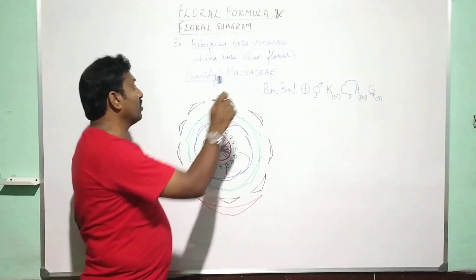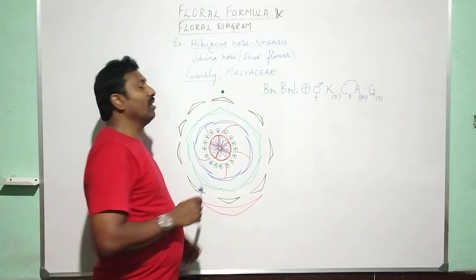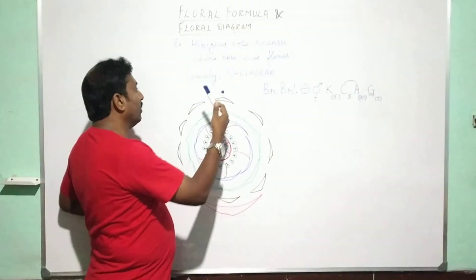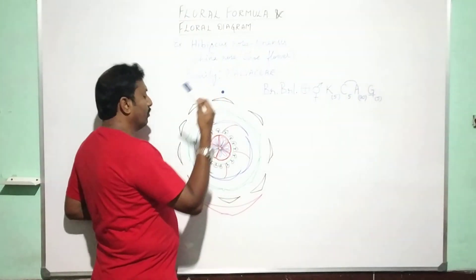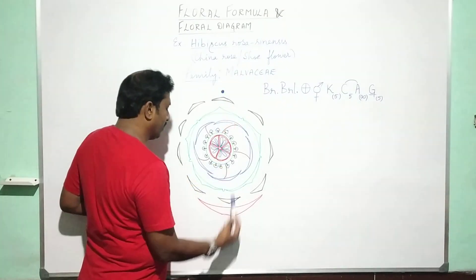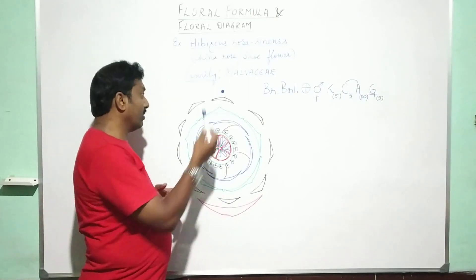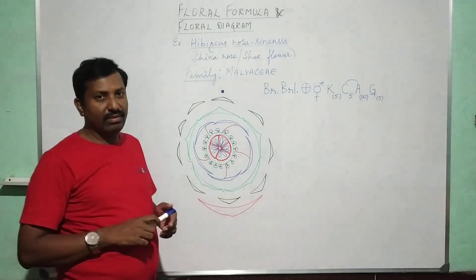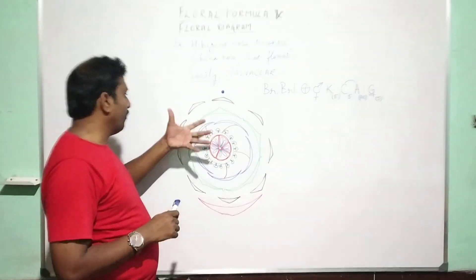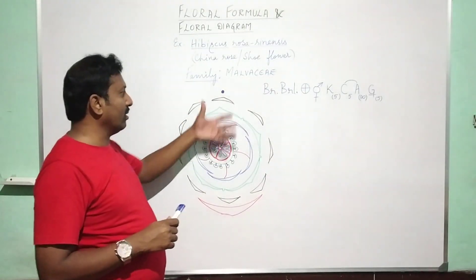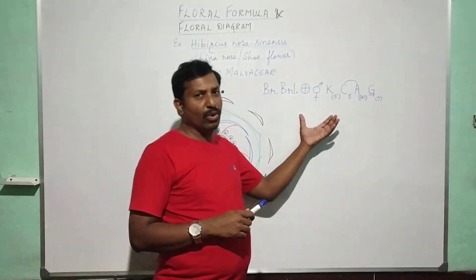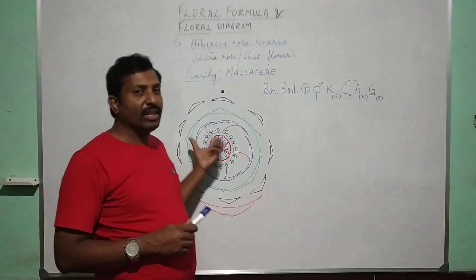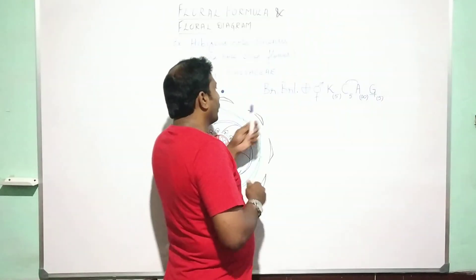Surrounding the ovary you can see the staminal tube containing monothecous anthers, which is a characteristic feature of family Malvaceae. This is the posterior side and this is the anterior side. This is the floral diagram and this is the floral formula.